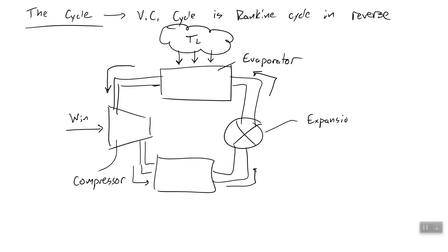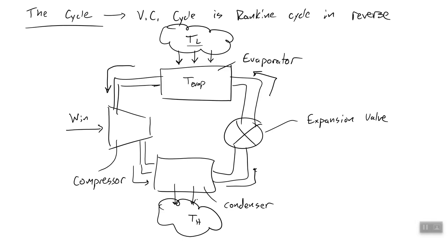This is an expansion valve. Its purpose is to drop the pressure of the fluid and cause the temperature to drop dramatically. If we're going to transfer heat from TL to the evaporator, the temperature of the evaporator must be really cold, so that heat can go from TL to T_evap. Our last component is the condenser, which rejects heat to our hot temperature sink. It condenses the vapor leaving the compressor into a liquid, so the temperature of the condenser must be very hot for heat to move from T_condenser to T_evap.